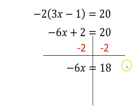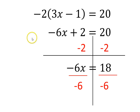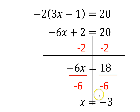Negative 6 times x — the opposite of that multiplication is division. So we divide both sides by negative 6. On the left-hand side the negative 6s cancel out — negative 6 divided by negative 6 is 1 — leaving us with 1x, or just x. On the right-hand side, 18 divided by negative 6 is negative 3. So x equals negative 3.